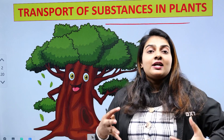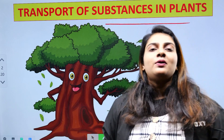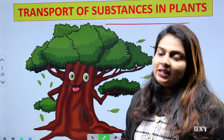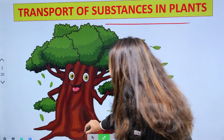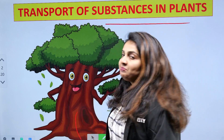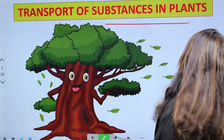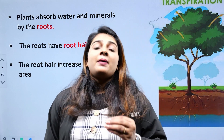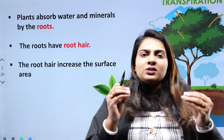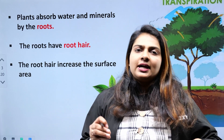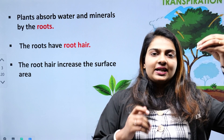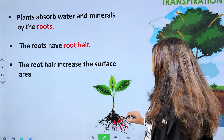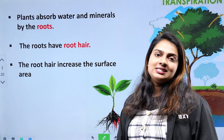Minerals and water are being absorbed in these plants. If we use these roots, we use these roots. This is a small root hair.